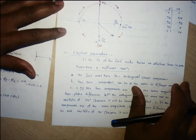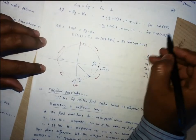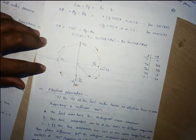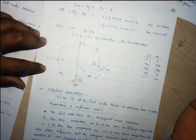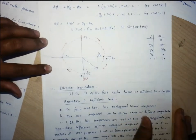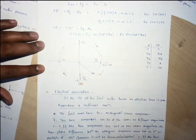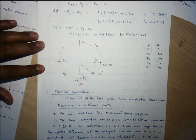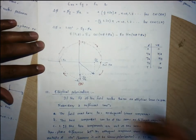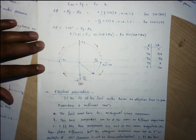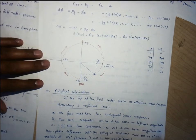Depending upon the propagation direction — either plus z or minus z — we can have either clockwise or counterclockwise polarization. For wave propagating in the minus z direction, if the phase difference is positive it is considered clockwise (right hand); if negative, it is counterclockwise (left hand). For elliptical polarization, the magnitude of the two orthogonal components should be different, so the axial ratio should not be one.